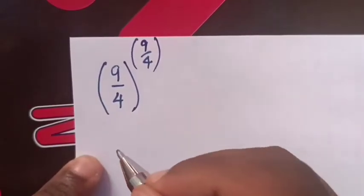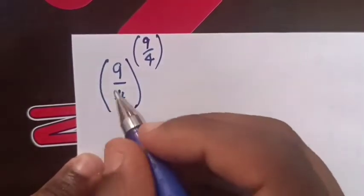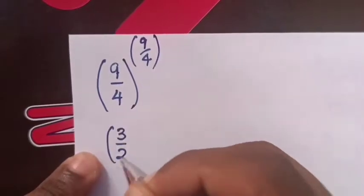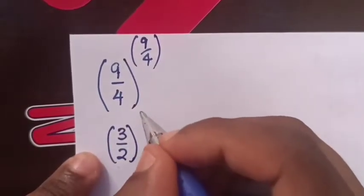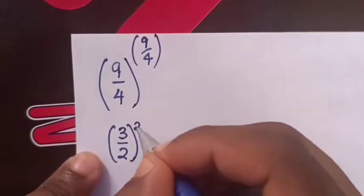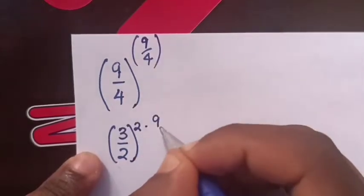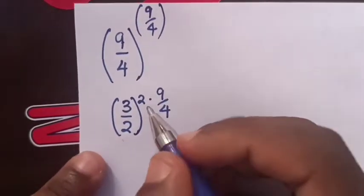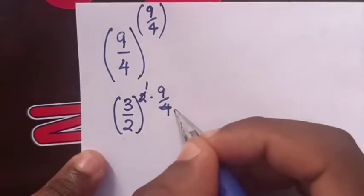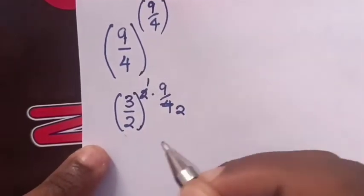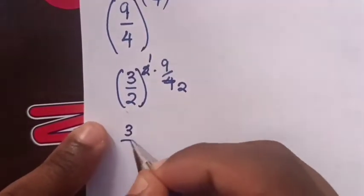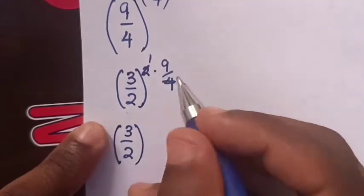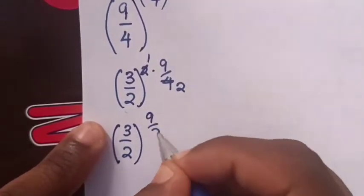First, 9 over 4 is the same as 3 over 2 squared, then times power of 9 over 4. The 2 can be simplified with 4 to give 2, so it becomes 3 over 2 to the power of 9 over 2.